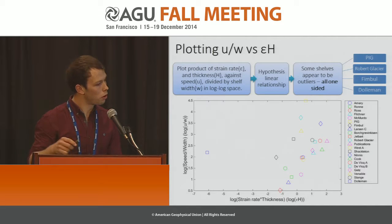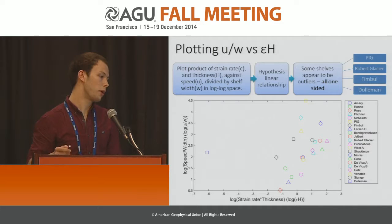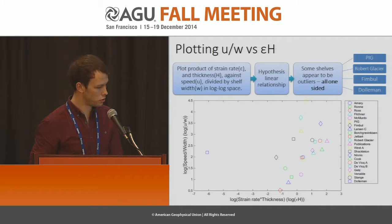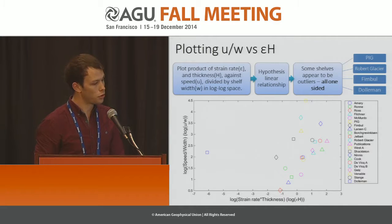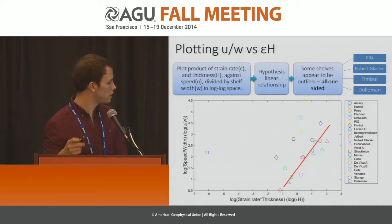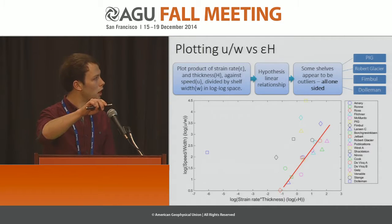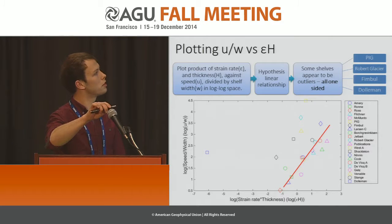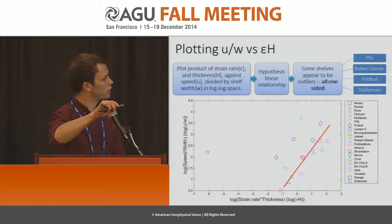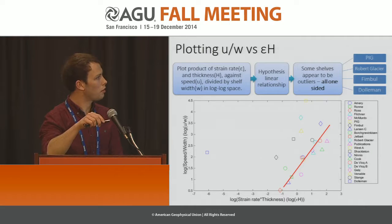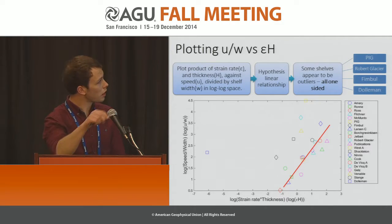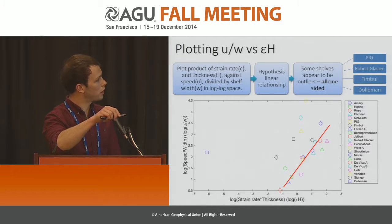We can now plot all the data for all 22 ice shelves, with velocity divided by width against strain rate multiplied by thickness in log-log space. We hypothesize that there should be a linear relationship between these two factors. Drawing a line by eye through the majority of the data, we see there are a number of outliers which lie to the upside of the line. These ice shelves have a higher velocity than we would expect, and include Panin Glacier ice shelf, Robert Glacier ice shelf, Fimbul ice shelf, and Dotson.